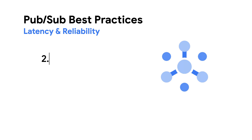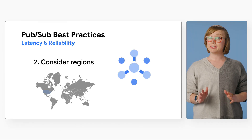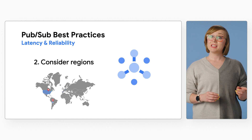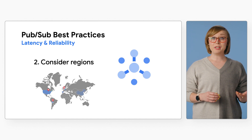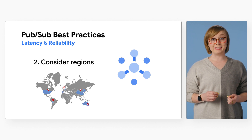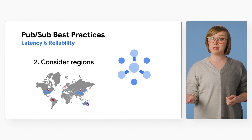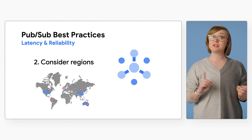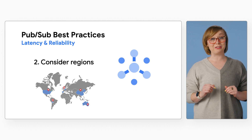Number two: consider regions. Regions can make a difference in latency. Keep in mind that regional traffic will have the lowest latency compared to cross-region traffic between publisher and subscriber clients.